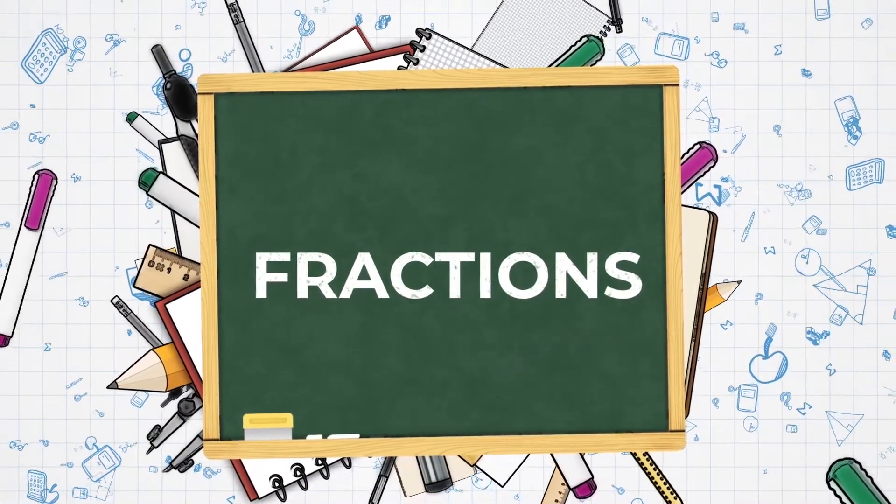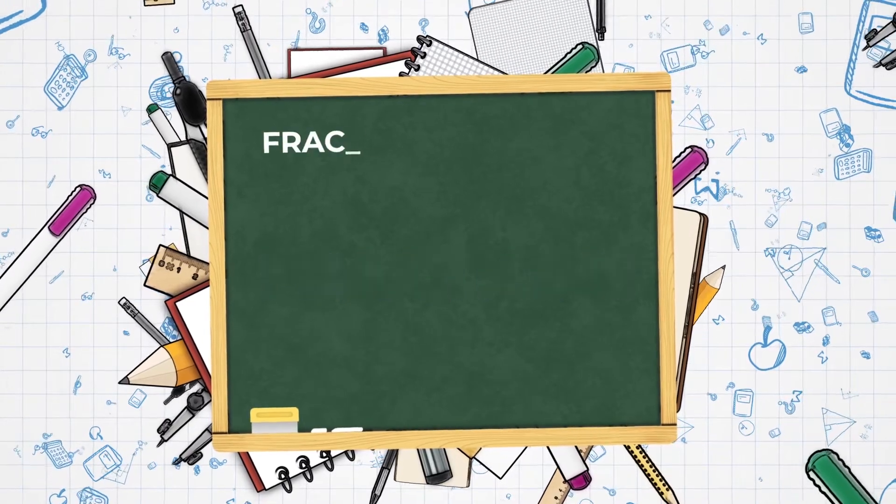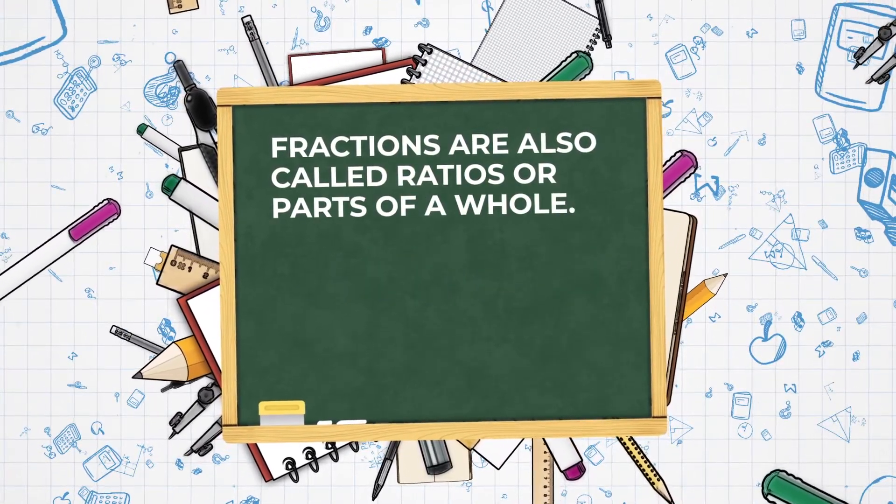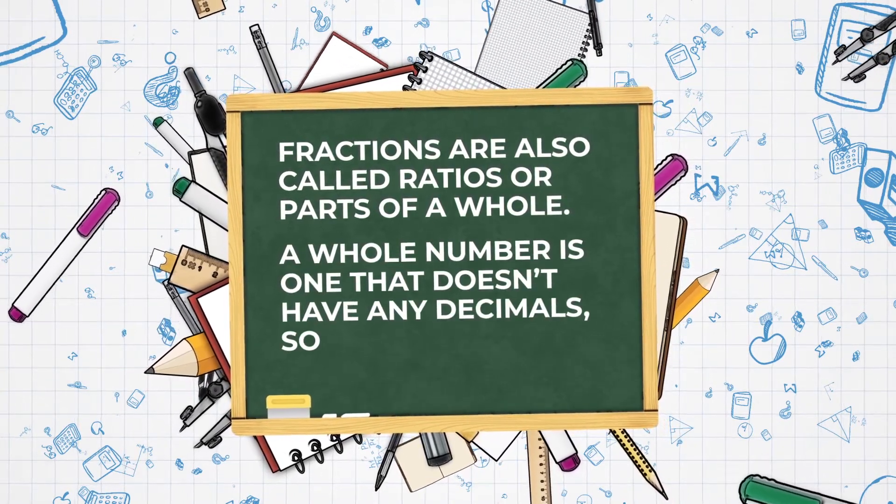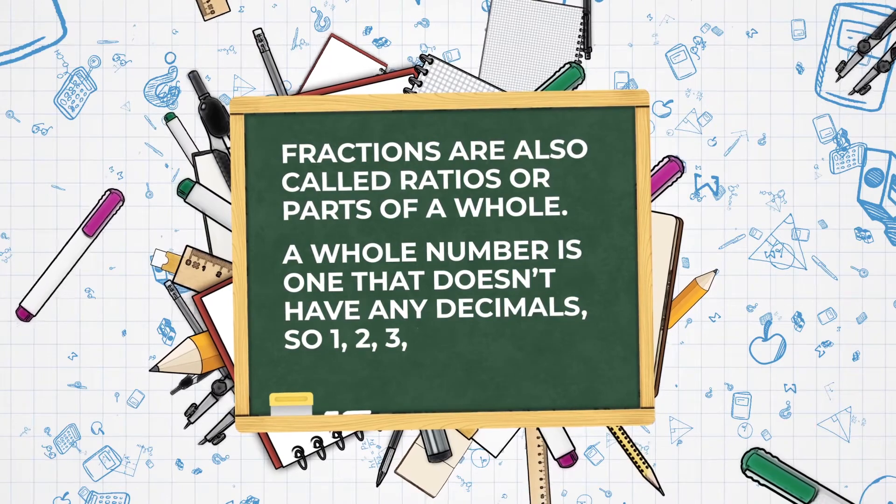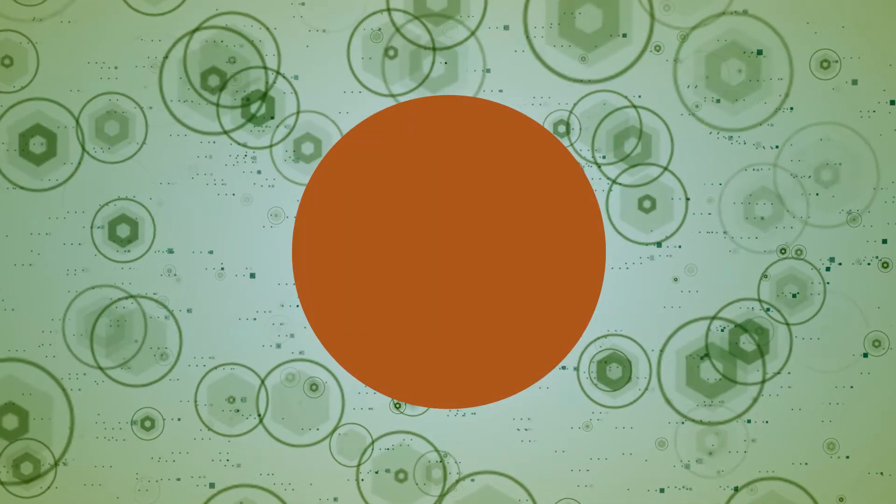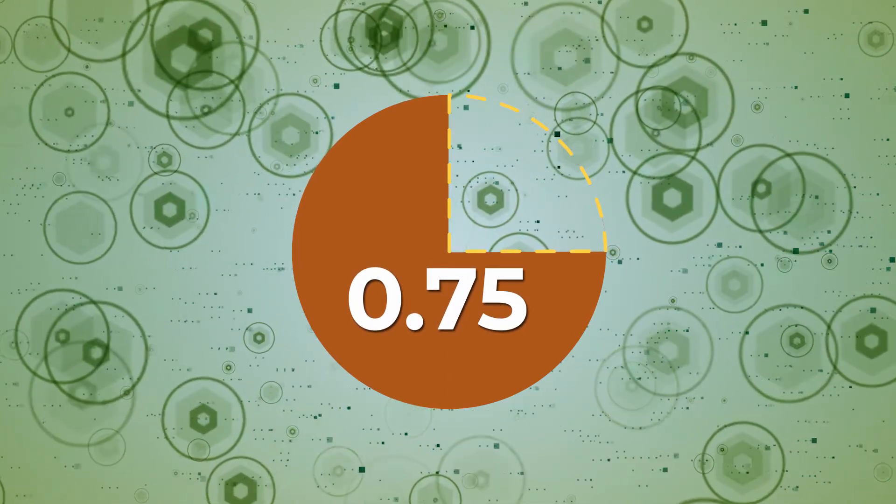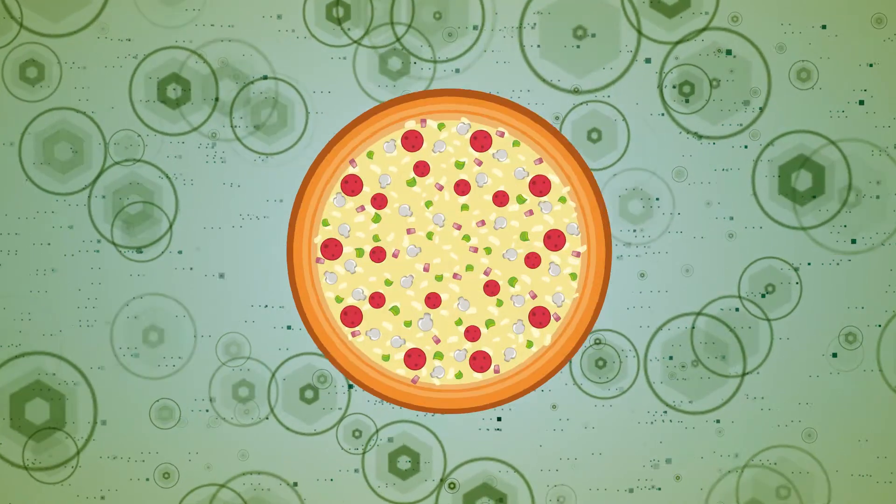Let's start by looking at fractions, which is one of those topics that students love to hate. Fractions are also called ratios or parts of a whole. A whole number is one that doesn't have any decimals, so one, two, three, five thousand, and so on. However, 0.75 is not a whole number.